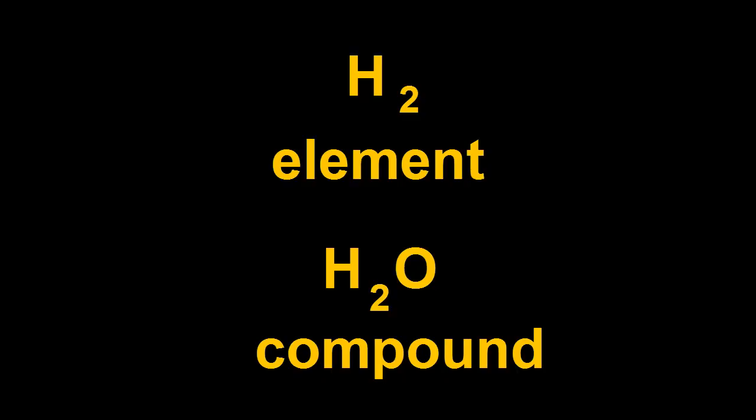It's easy to tell the difference between an element and a compound just by looking at its formula. H2 contains only one symbol, H, so it's an element. H2O contains two symbols, H and O, so it's a compound.